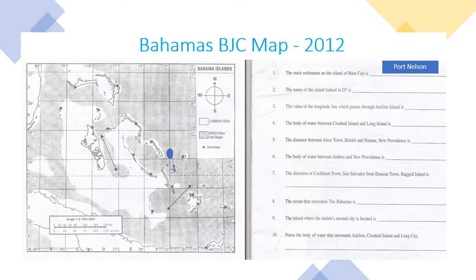On that map, there is a blue ball and a blue arrow that identifies the island of Rum Cay. Look at question number one on the opposite side, and it states the main settlement on the island of Rum Cay is, and the answer highlighted in blue is Port Nelson. As you can see, the map does not have any labeling, so you will have to know where your islands and settlements are located.